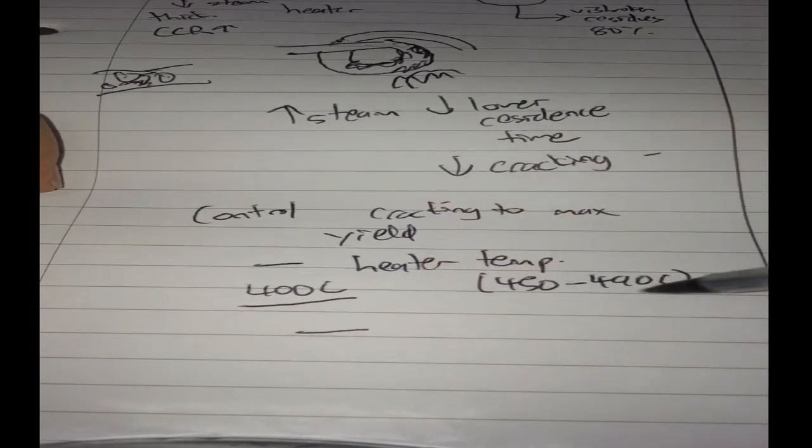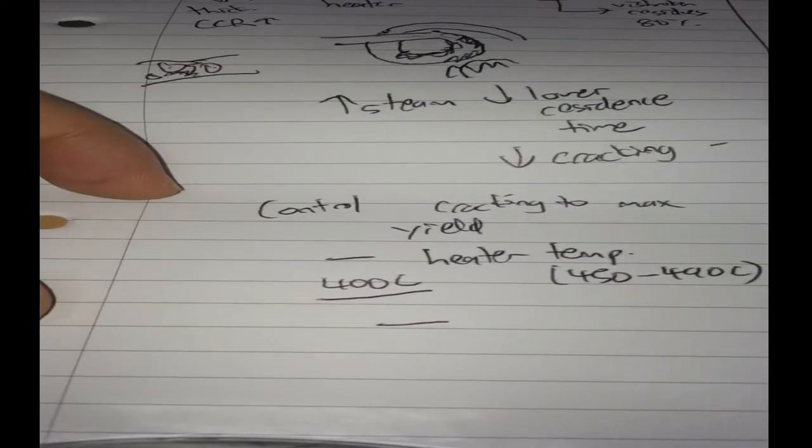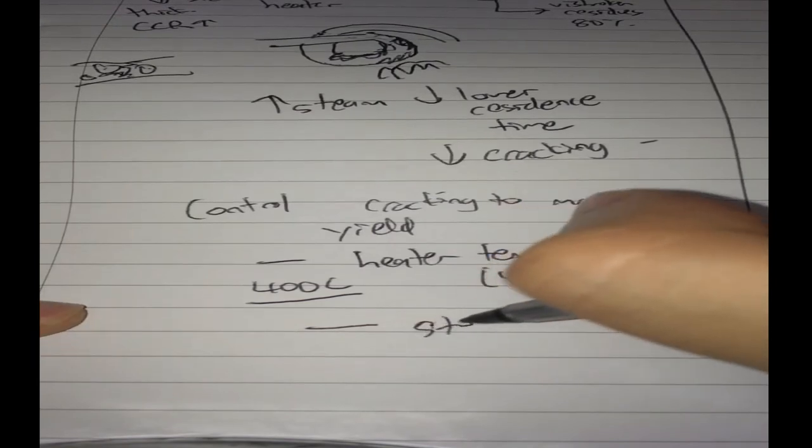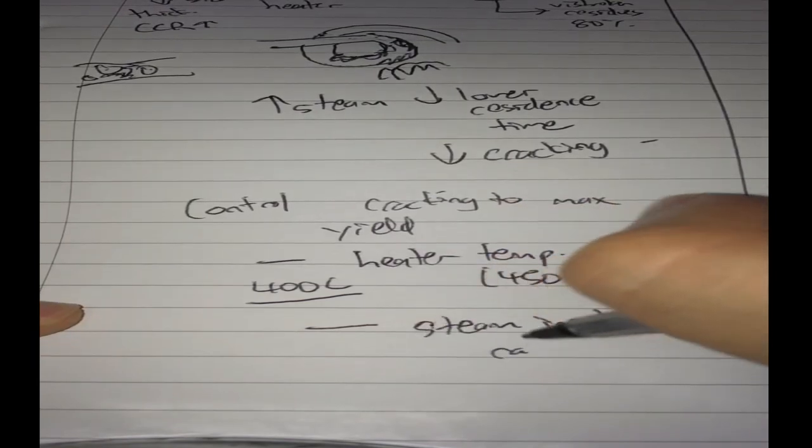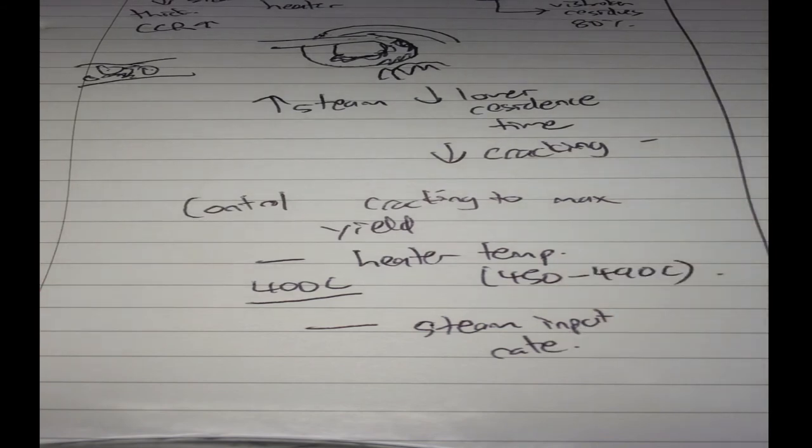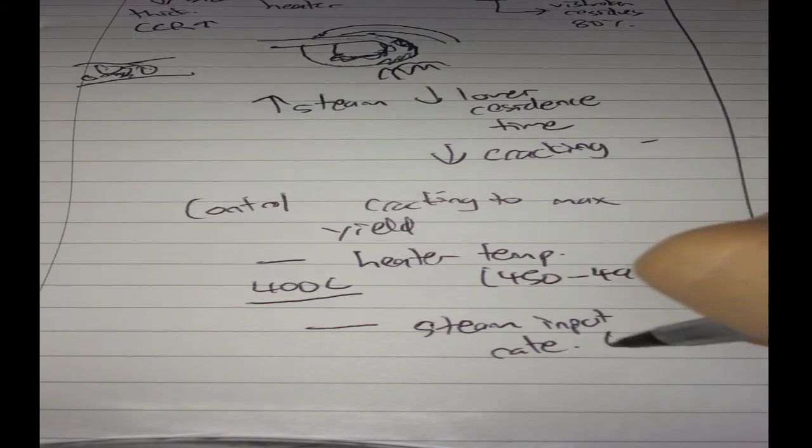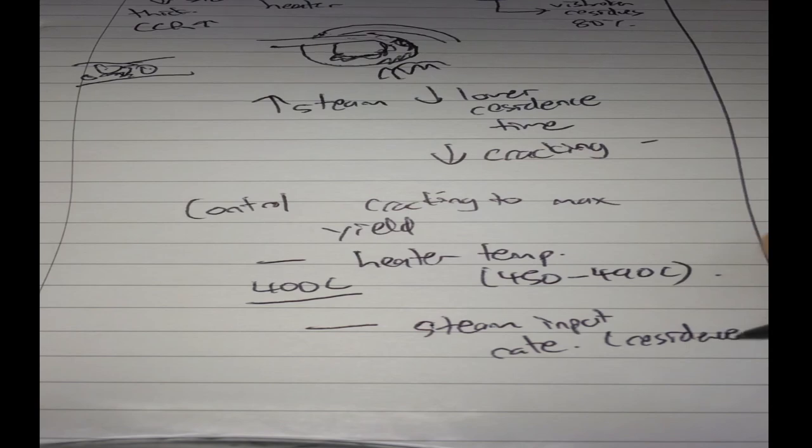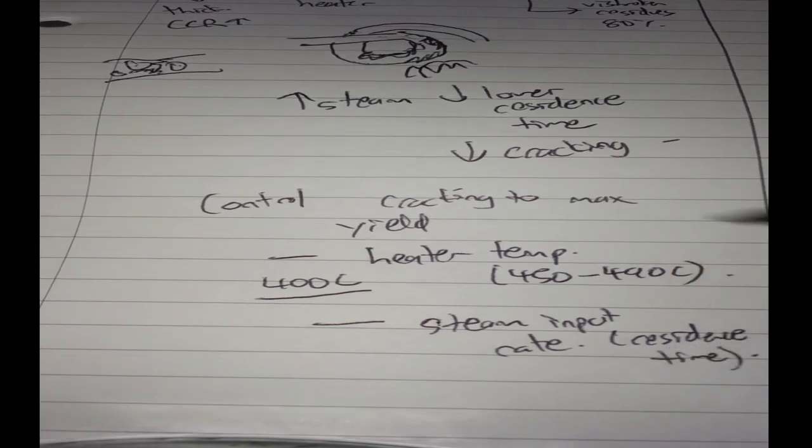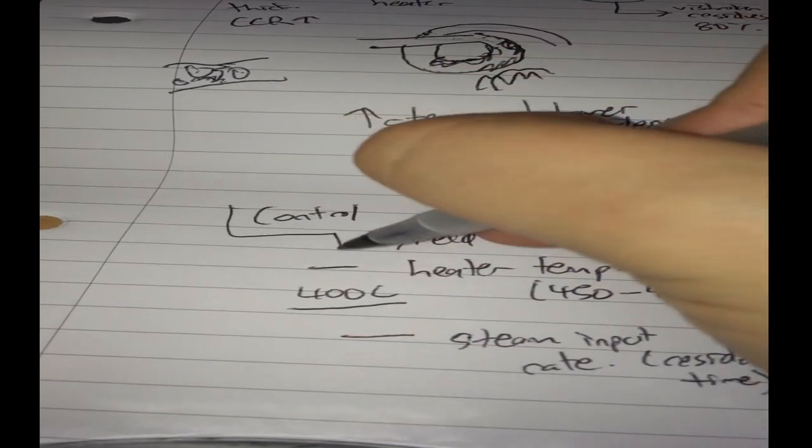So if I increase the temperature to like 490, that upper limit, more cracking is going to occur. And again, I can adjust my steam input, the steam input rate to adjust my residence time. So that's how you maximize the yield from the visbreaker.